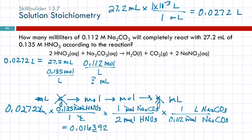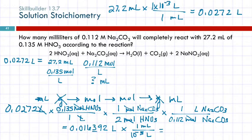Calculating: 0.0272 × 0.135 ÷ 2 ÷ 0.112 = 0.16392 liters. Converting back to milliliters gives 16.4 milliliters.